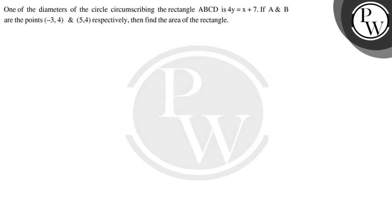Let's see the question. The question says: one of the diameters of the circle circumscribing the rectangle ABCD is 4y = x + 7. If A and B are the points (-3, 4) and (5, 4) respectively, then find the area of the rectangle.